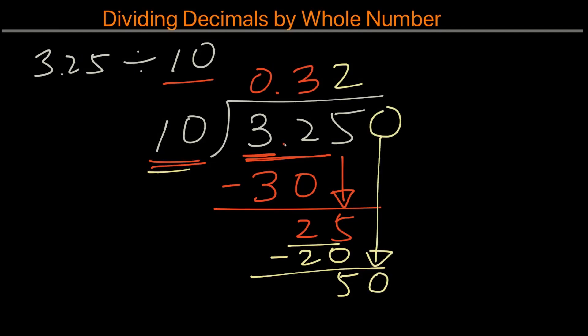Now we have 50. And we'll take 50 divided by 10. That will be 5. So 10 times 5 is 50. And the remainder now is 0. And therefore, the answer is 0.325.